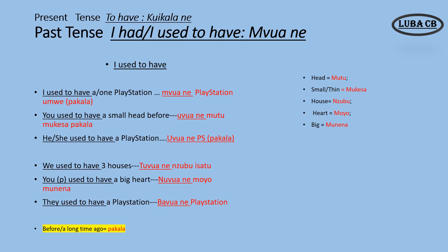Now let's practice 'I used to have.' I used to have one PlayStation: one a pakala. Pakala as an emphasis to say it was a long time ago. You used to have a small head before: one a move to mucusa pakala. He used to have a PlayStation: one a playstation pakala.